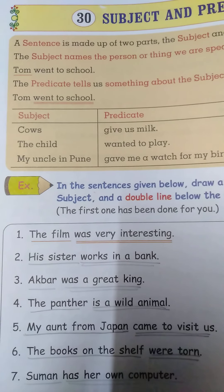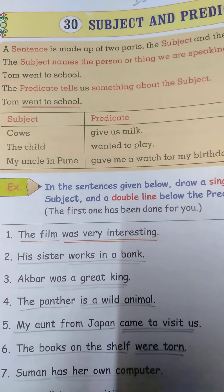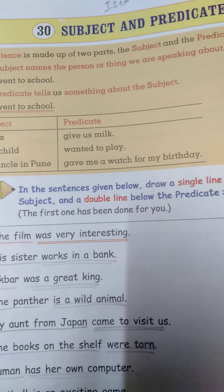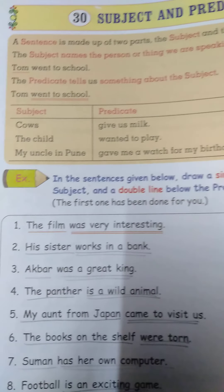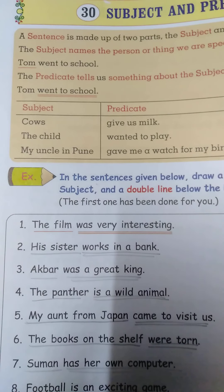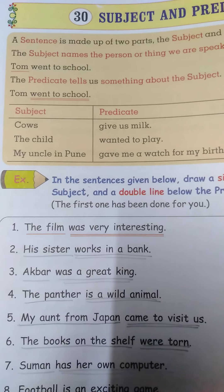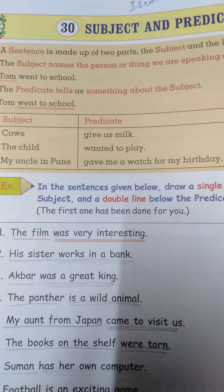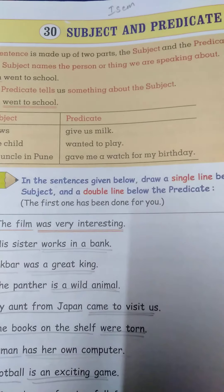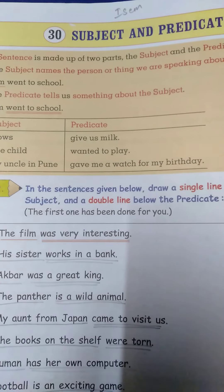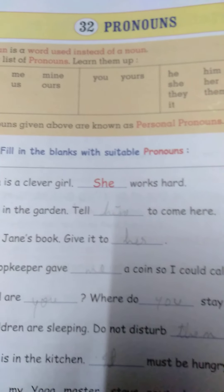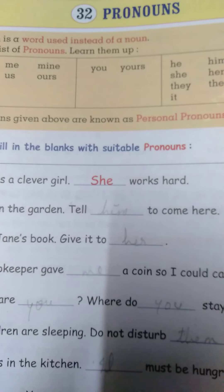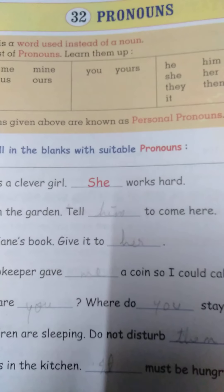So, to summarize: the subject means the person or thing we are speaking about, and the predicate tells us something about the subject. Now see the next lesson, lesson 32: Pronouns.